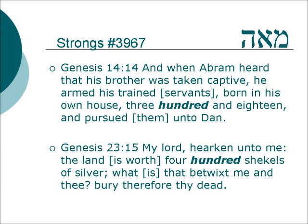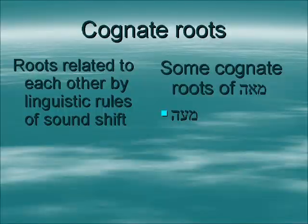This is the only use for this root — to talk about the number hundred. So we are going to look into the cognate roots to see if we can find anything deeper about the meaning. Cognate roots are roots that are related to each other by linguistic rules of sound shift. And there is only one for mea, and that is mea with an ayin.